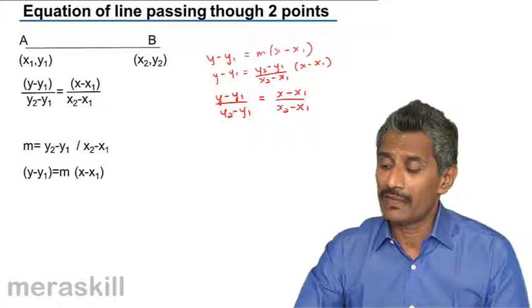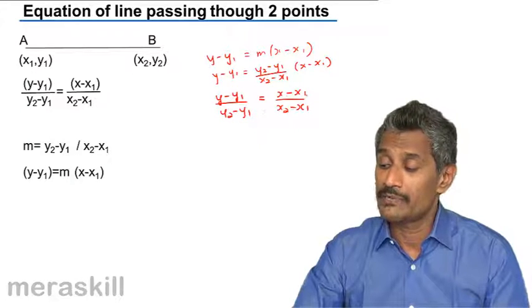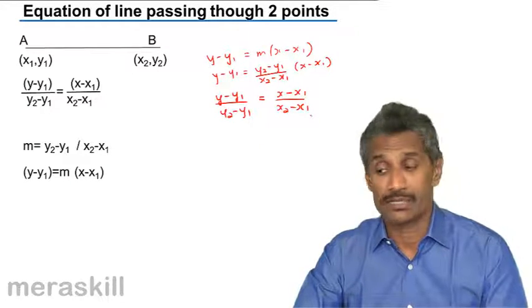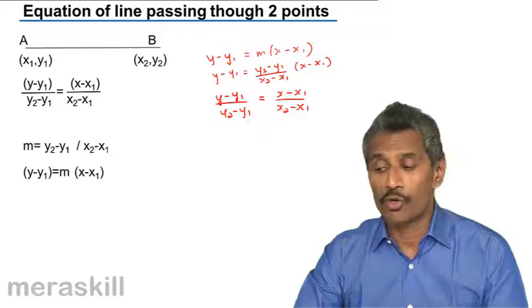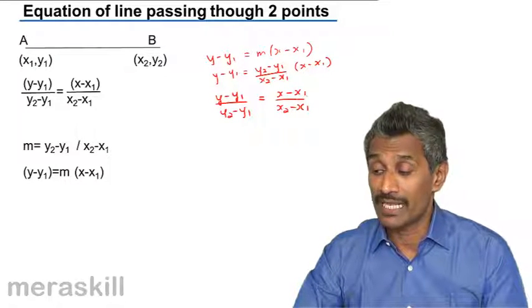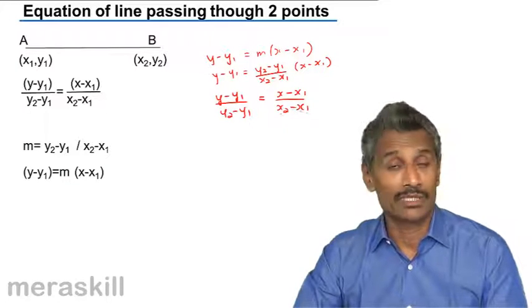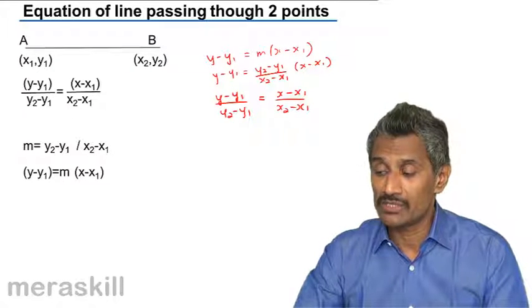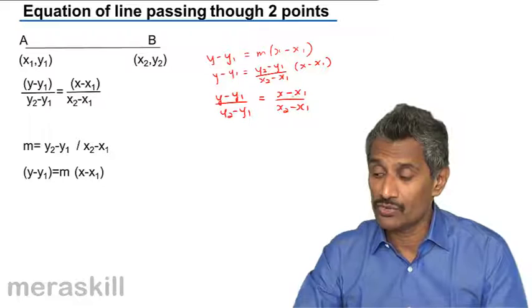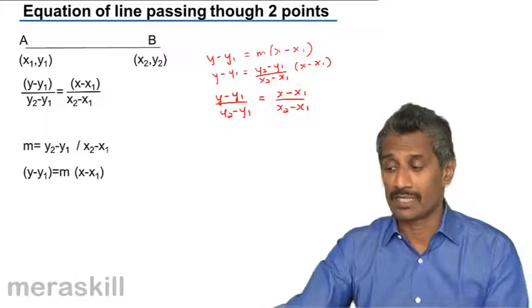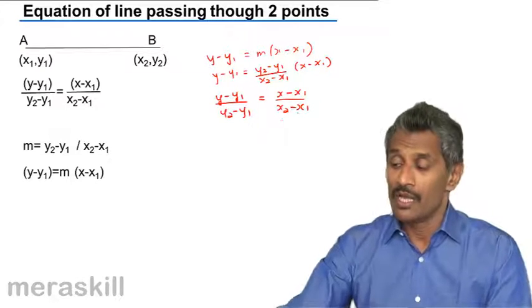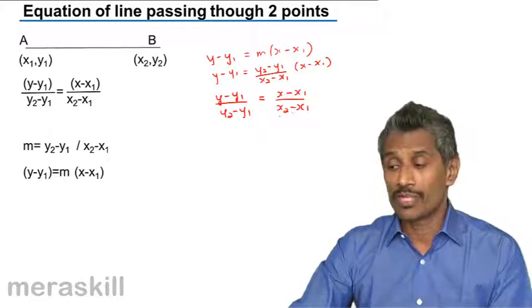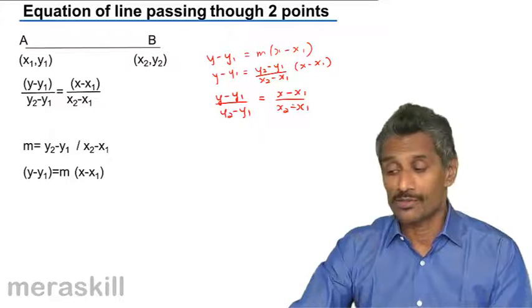It can even be y minus y1 upon y1 minus y2, x minus x1 upon x1 minus x2. We can write it like that too. And accordingly we get the value. Or you can write y minus y2 upon y2 minus y1, x minus x2 upon x2 minus x1. We have to see that whatever is the change on one side, you should see the corresponding change on the other side. It should be y minus y1 on this side and there is x minus x2. So this is called the two-point form of the equation passing through two points.